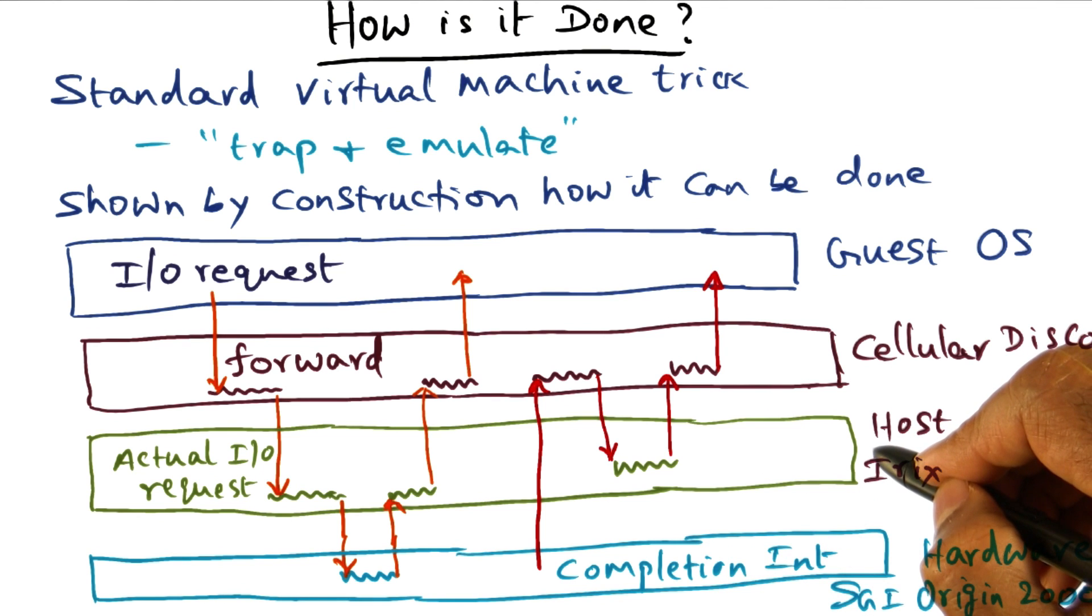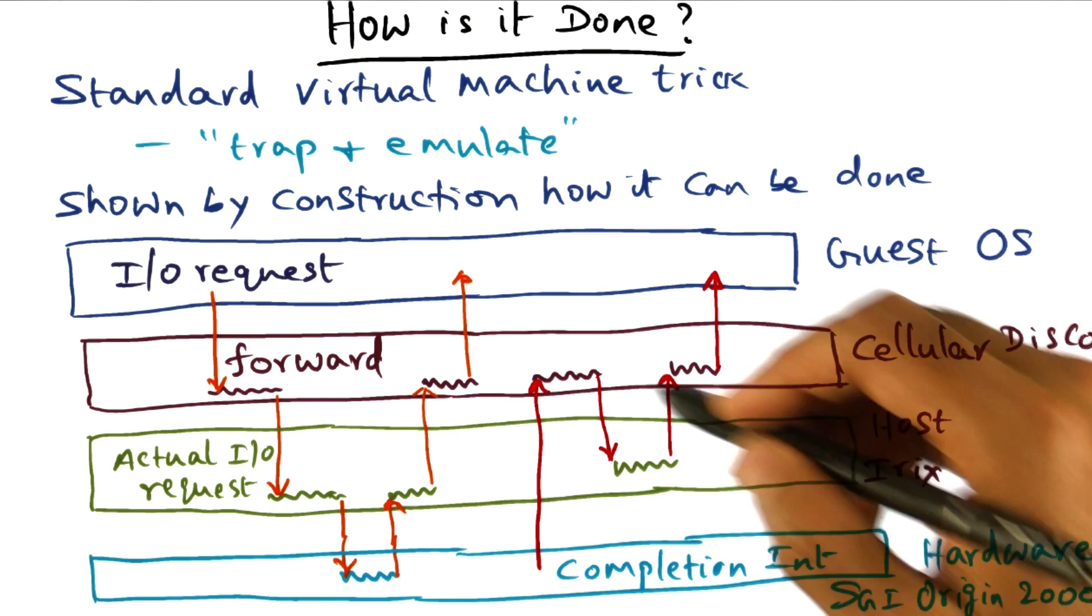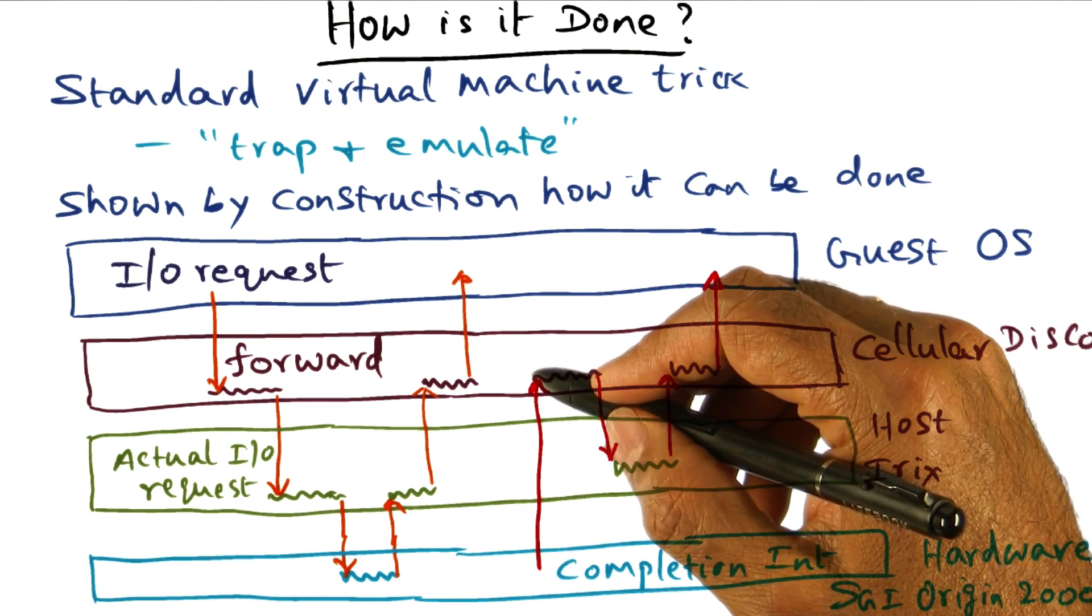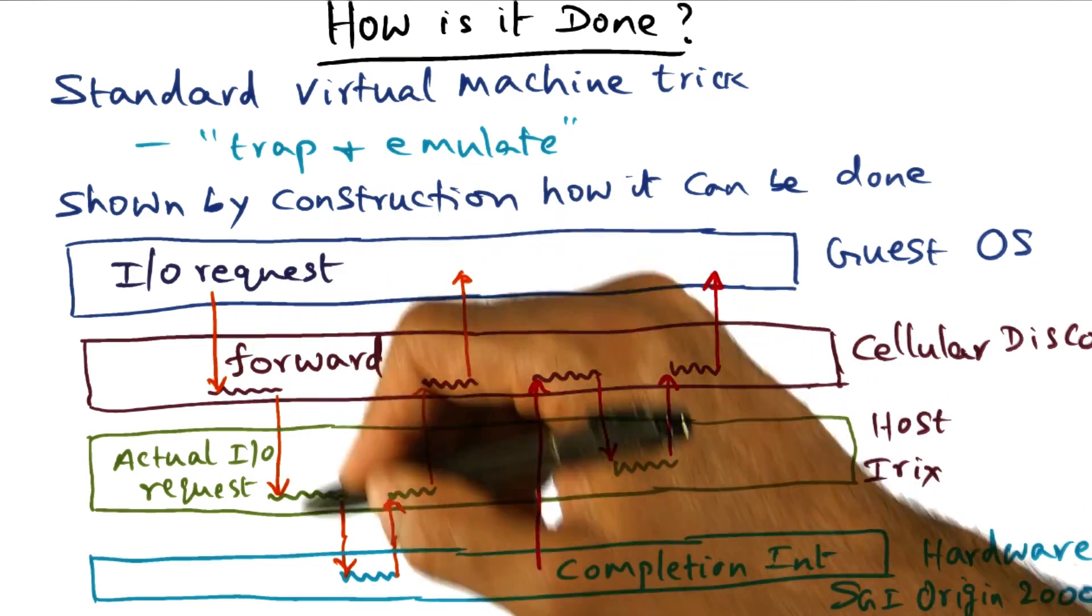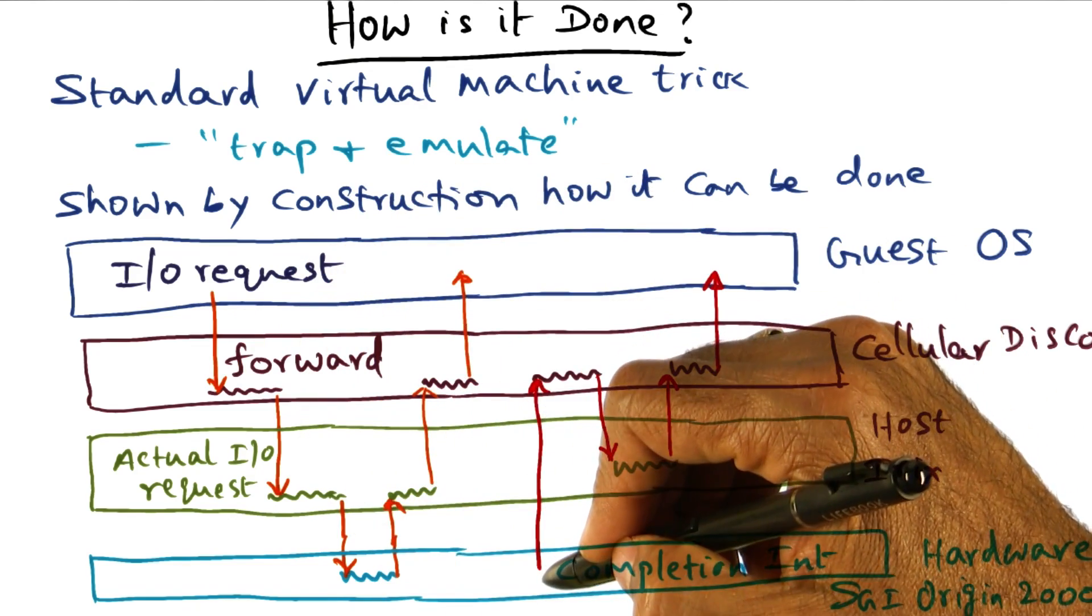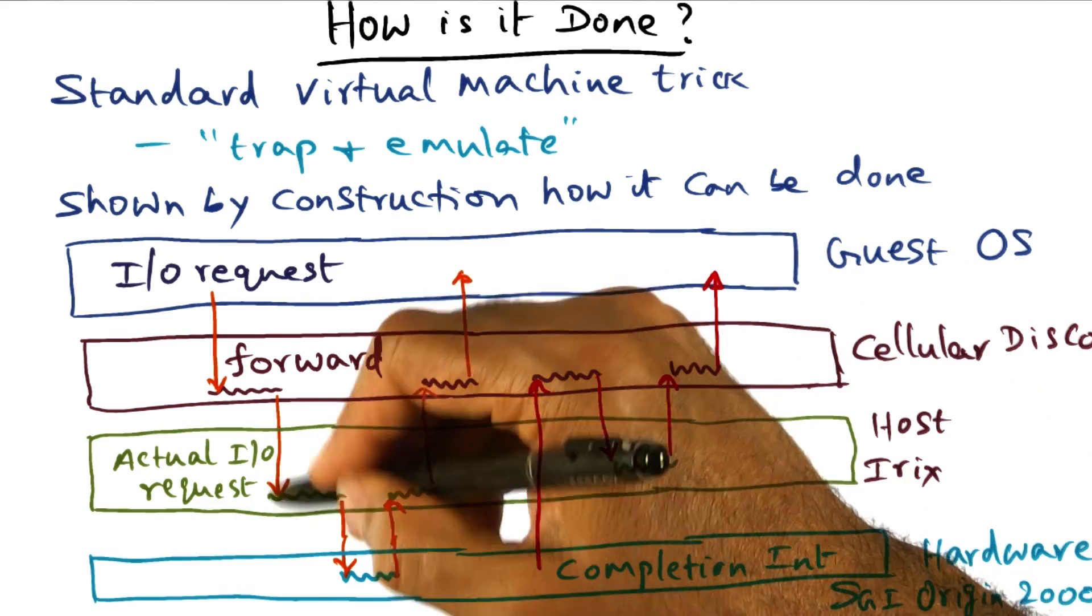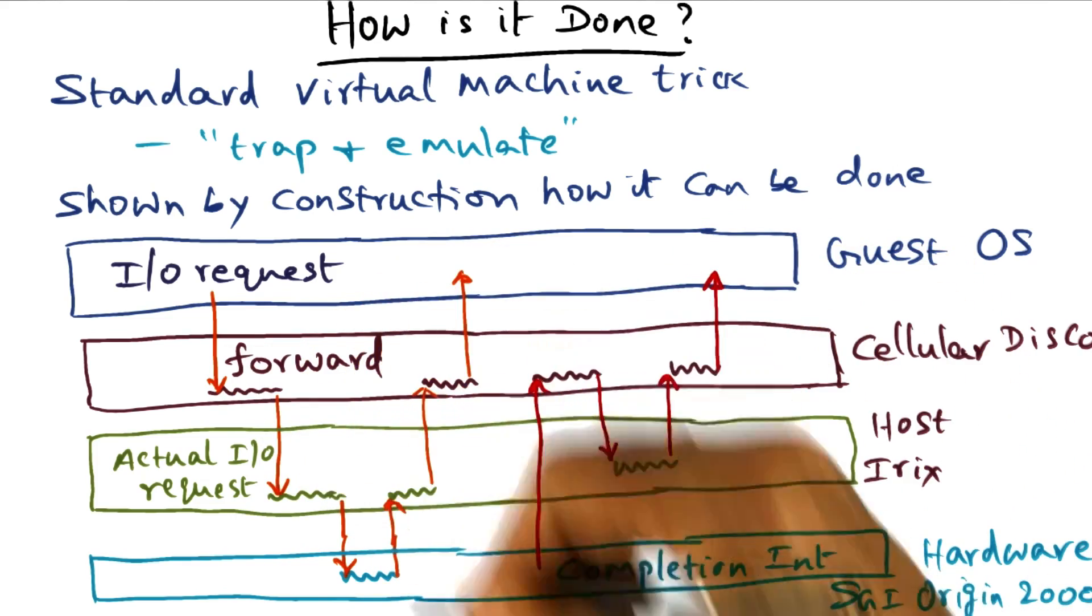When the completion interrupt comes in, normally in any vanilla operating system, the completion interrupt will go to the host operating system. But Cellular Disco has faked it by, when it passed the request, saying when a completion request comes in, call me.